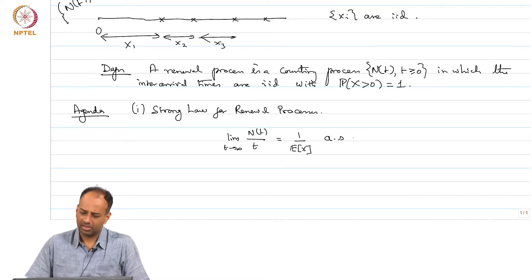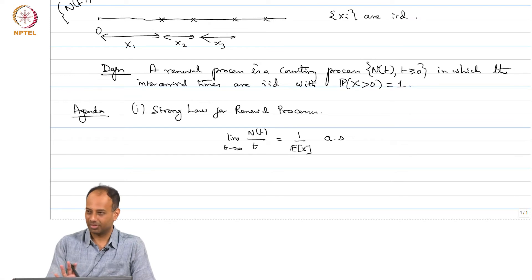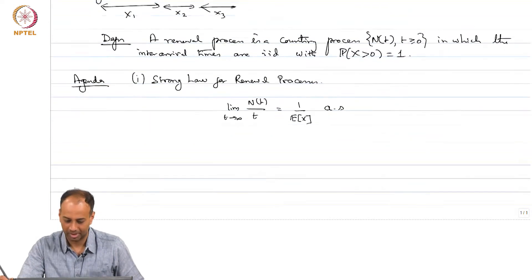Now, as it happens this expectation of X could actually be even infinite, but the strong law for renewal process still holds regardless of whether expected X is finite or infinite. We will mostly study expectation of X being finite. But even with expectation of X being infinite, this result still holds. In that case limit NT over t will simply be 0 almost surely if expectation of X is infinite.